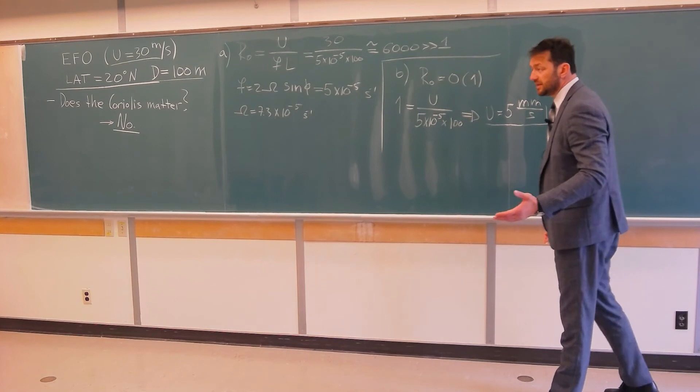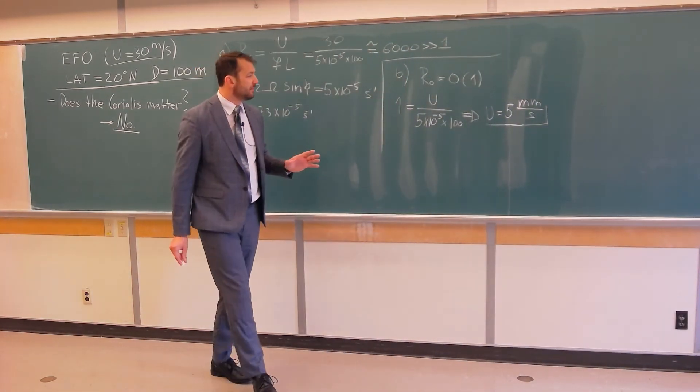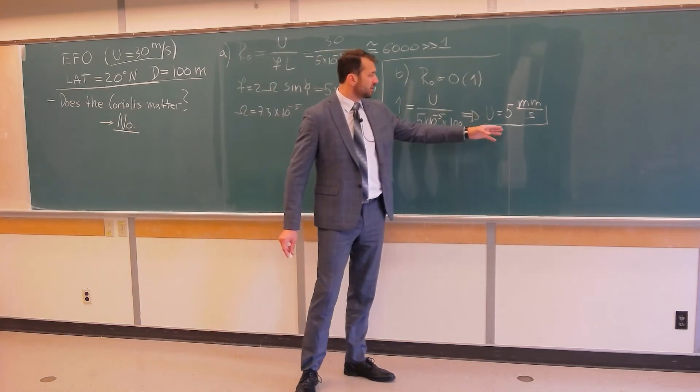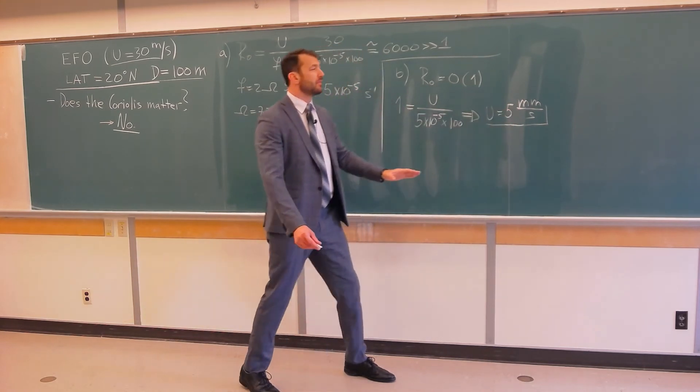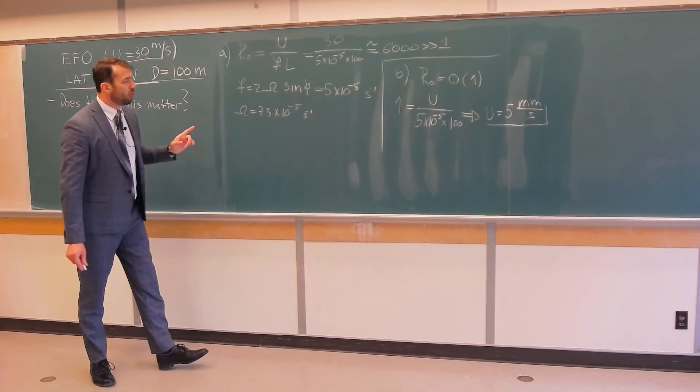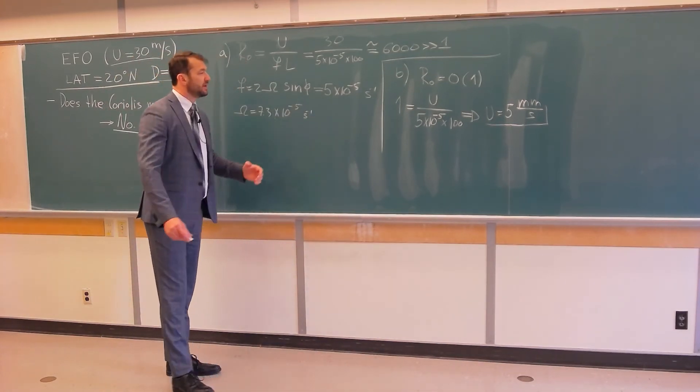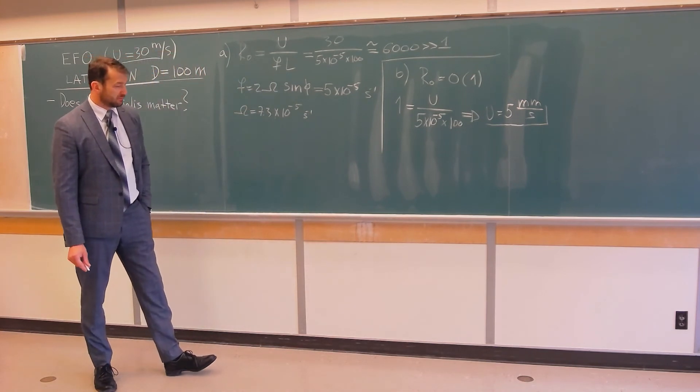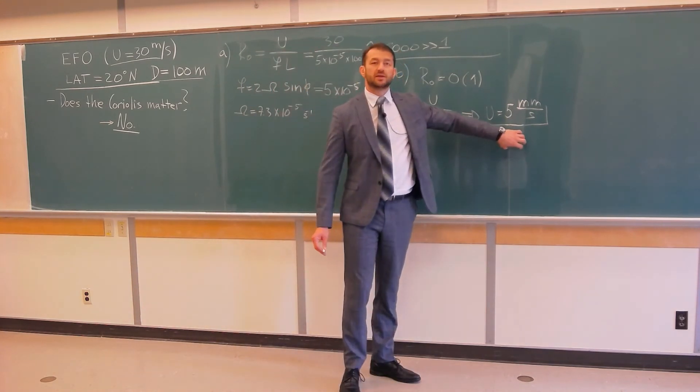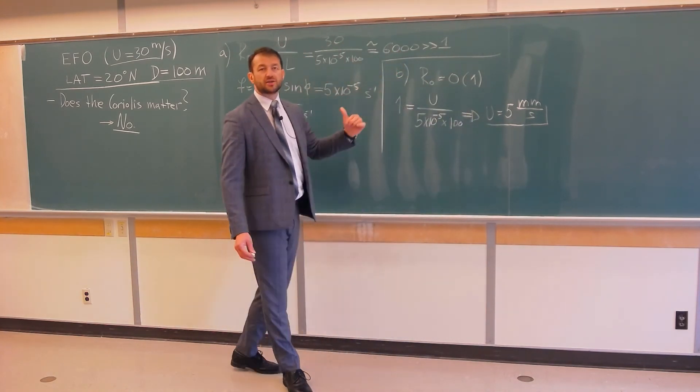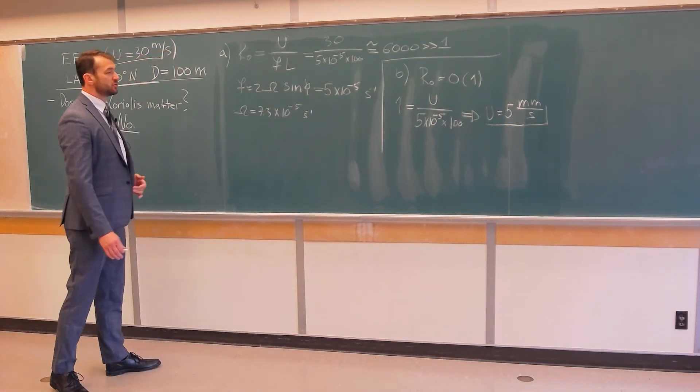So, you can see that the velocity in this vortex would have to be around, because this is order of magnitude, around 1 millimeter, 2, 5 millimeters per second, for the Coriolis force to be equally important as the inertial forces. Or, in different words, we could say that this is the value of the velocity that needs to be in this vortex so that the rotation of the Earth plays an important role in the dynamics of this tornado.